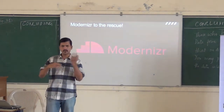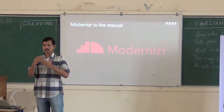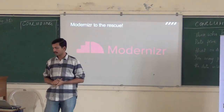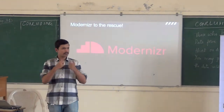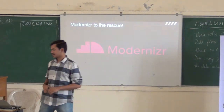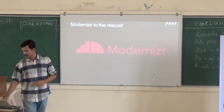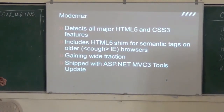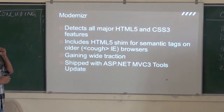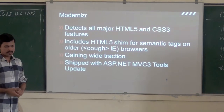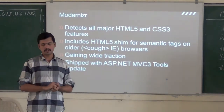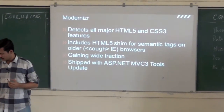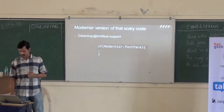CSS3 has this feature called font-face which allows you to use custom typefaces. That code was to detect support for CSS3 font-face. Modernizr is a library — it's open source, available on GitHub — which allows you to do feature detection in a very simple kind of code.